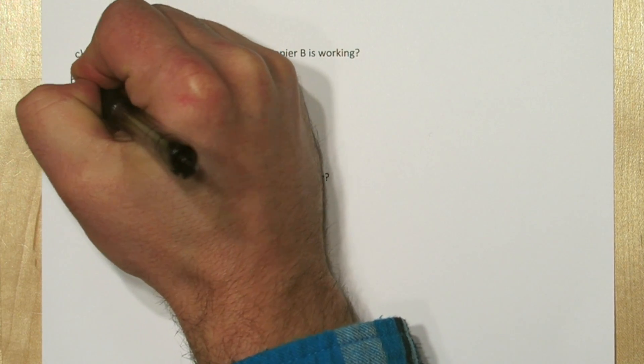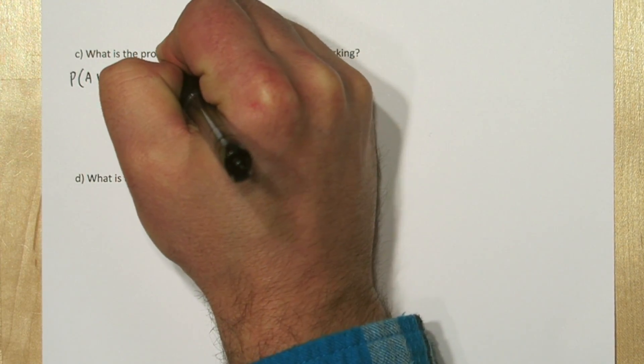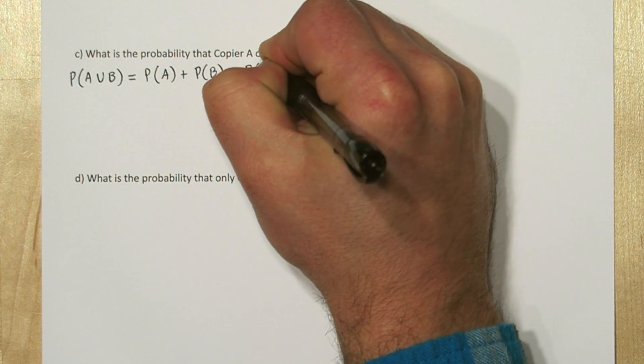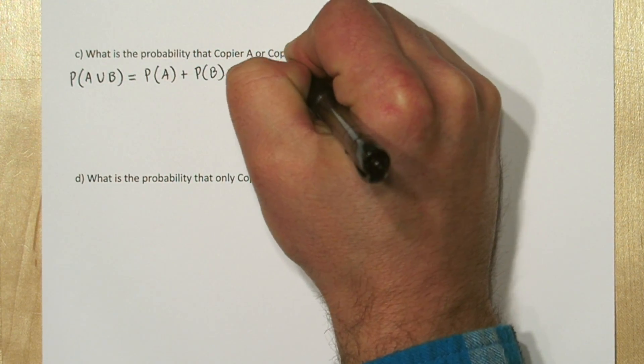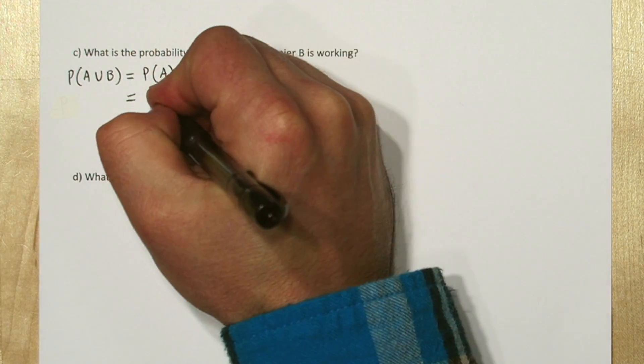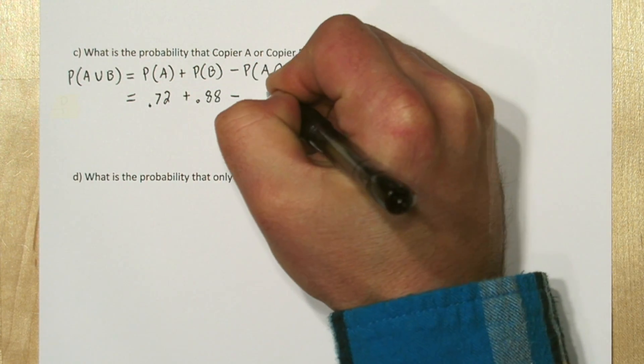Now a popular formula in probability is the general addition rule. The probability of A or B equals the probability of A plus the probability of B minus the probability of A and B. So the probability that copier A works is 0.72, add that to the probability that copier B works, 0.88.